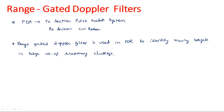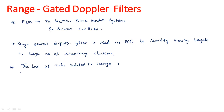Moving targets can be identified using the pulse Doppler radar by the concept called the range gated Doppler filter. The loss of information related to range may be eliminated by first quantizing the received range — or time, since range and time are proportional to each other — into small intervals.